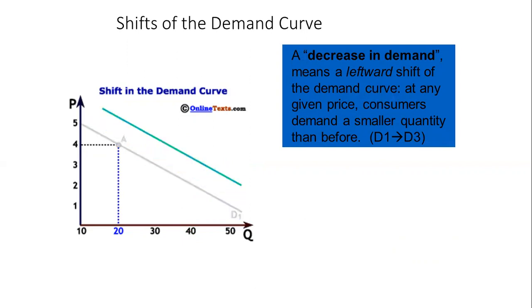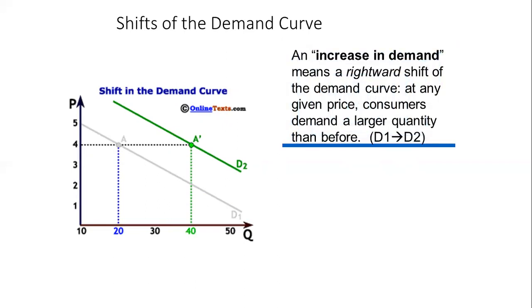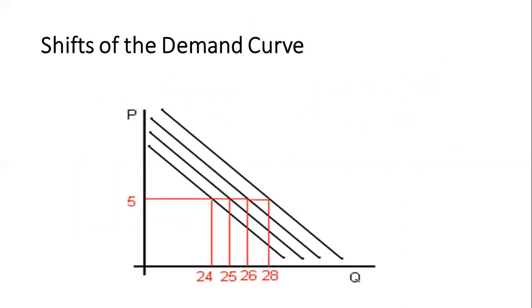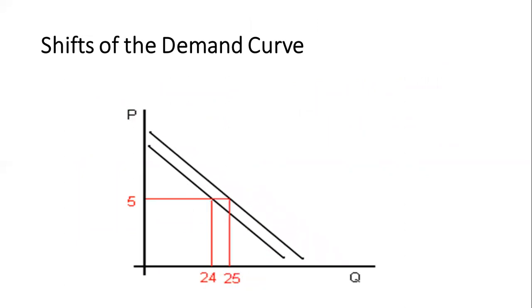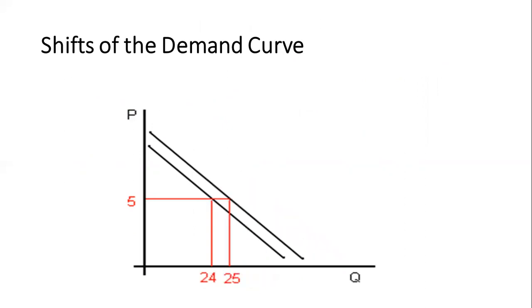A decrease in demand means a leftward shift of the demand curve — from D2 back to D1. An increase in demand shifts the curve from D1 to D2. Whenever there is an increase in demand and prices are regulated and controlled, prices remain the same but my capacity to buy increases.